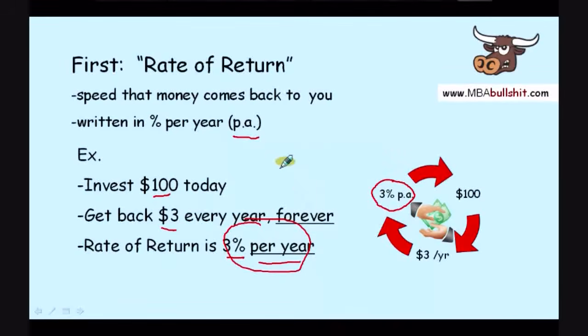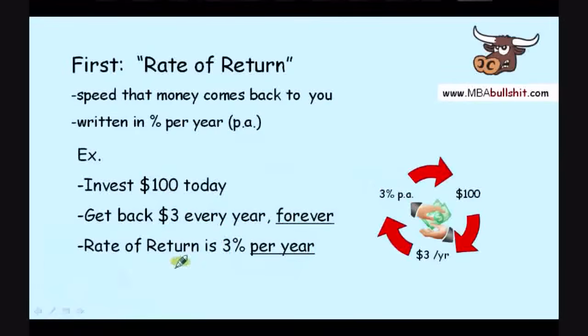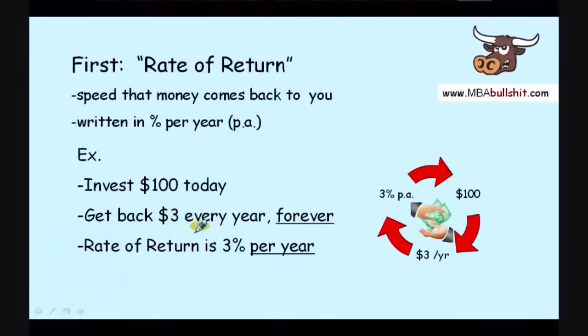You see, it's very simple. You do not even need to use a formula in this case. We can easily estimate that earning $3 every year forever after a $100 investment will equal 3% per year rate of return.